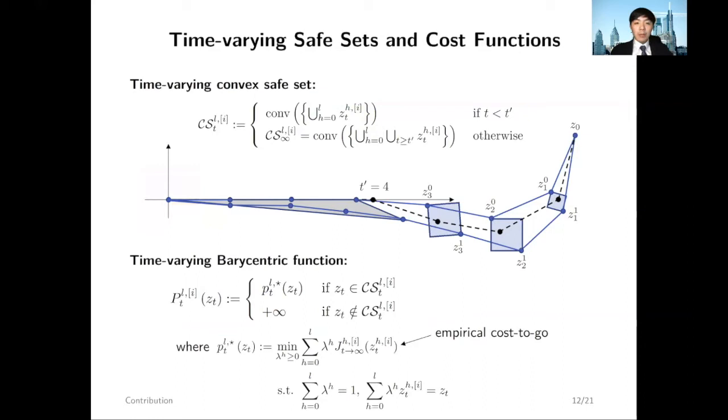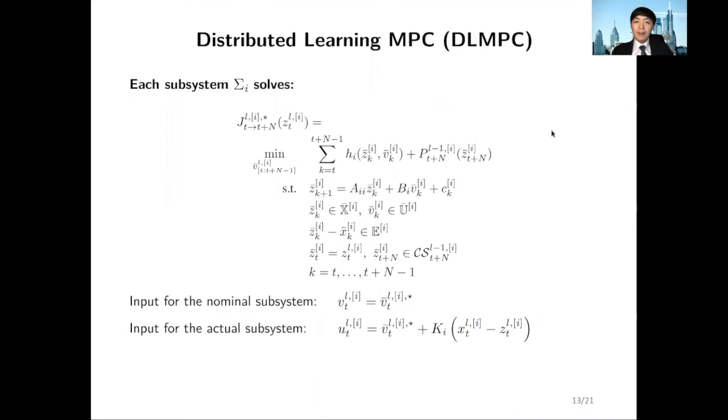Finally, we use a time-varying barycentric function as the terminal cost function in MPC problems. It is essentially minimizing over convex combinations of empirical cost-to-go at a particular time instance T.